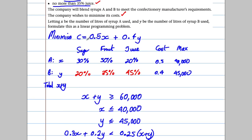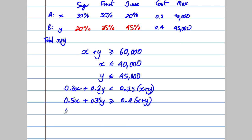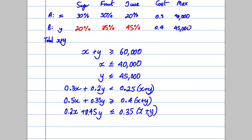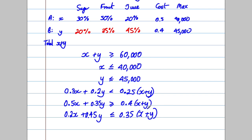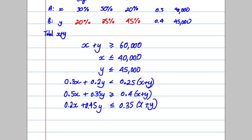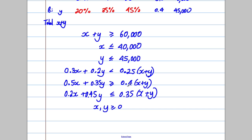For the juice constraint, we want no more than 35% juice. Syrup A gives 20% so 0.2x and syrup B gives 45% so 0.45y. This must be less than or equal to 35% of the total: 0.2x + 0.45y ≤ 0.35(x + y). We also need non-negativity constraints: x ≥ 0 and y ≥ 0.